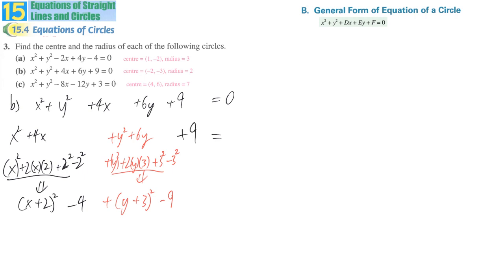Finally, the original constant from the question, so we just copy it down without any calculation. And then we tidy up, we get (x + 2)² + (y + 3)² minus 4 equal to 0.